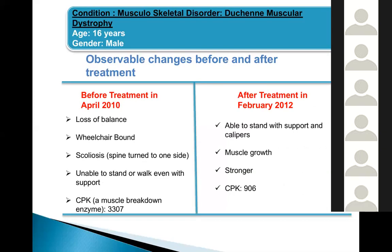Another patient had Duchenne's muscular dystrophy, which affects young male children. The condition typically starts deteriorating from age 3; by age 9, the child is in a wheelchair; by 14, bedridden; with a lifespan of only 18–22 years. CPK is an enzyme measuring muscular breakdown — normal levels should not exceed 200. This patient came in wheelchair-bound with elevated CPK. After treatment, he is now able to stand with support and his CPK has gone down.